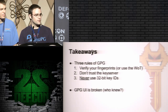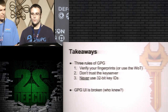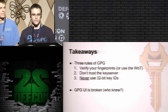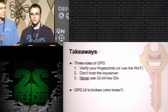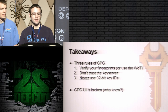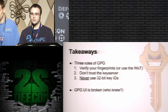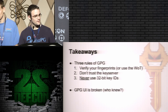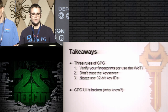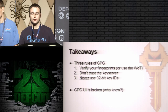Takeaways — three rules to follow to keep you safe with GPG. First, always verify your fingerprints by hand, follow the full fingerprint, and make sure you get it from a trusted source — or use the web of trust and understand the implications. Second, don't trust the key server: even if you request a full fingerprint, that might not be what you get back if the network is not secure. Finally, don't use 32-bit key IDs anywhere — don't put them on your blog, don't input them into GPG, and certainly don't put them into software documentation.